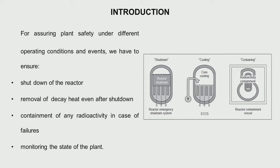Now let us look at how we can assure safety of a nuclear power plant. First, in case of an event, we must be able to shut down the plant — we must assure a safe shut down. When we do this shut down, we have stopped the fission reaction.